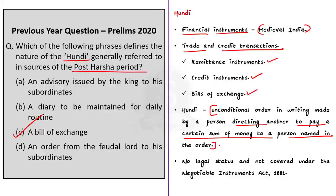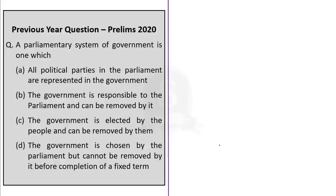The third question: A parliamentary system of government is one in which — Option A: all political parties in the parliament are represented in the government; Option B: the government is responsible to the parliament and can be removed by it; Option C: the government is elected by the people and can be removed by them; Option D: the government is chosen by the parliament but cannot be removed by it before completion of a fixed term.